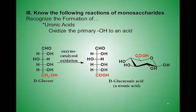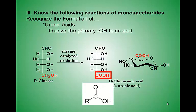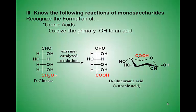The next reaction is oxidation. Here, it's clear that the alcohol group at the bottom of the chain is oxidized to a carboxylic acid group. Recall, the definition of oxidation is the gain of oxygen or the loss of hydrogen. The alcohol group lost two hydrogens and gained one oxygen to become a carboxylic acid.